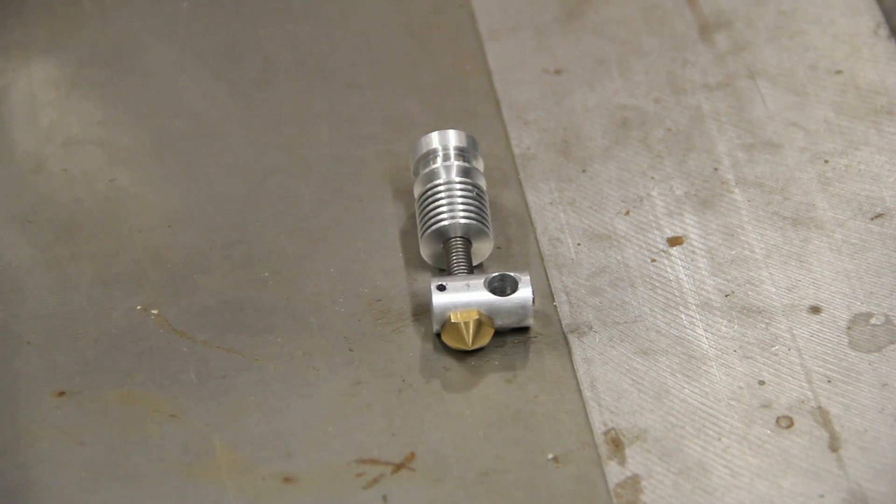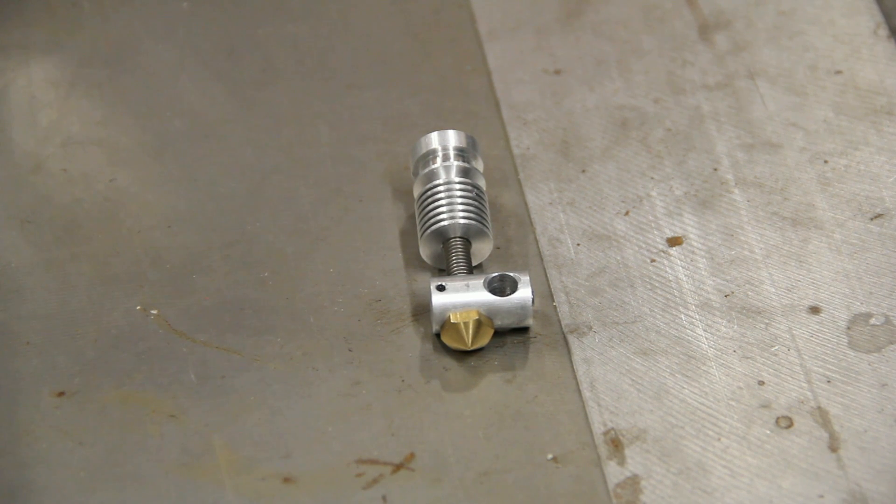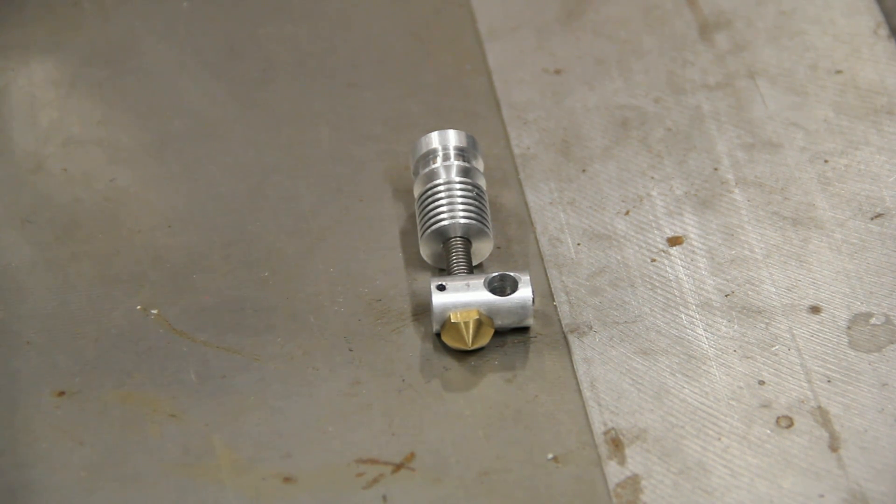So it does have an upper temperature limit which is still pretty generous. It's about 245 degrees centigrade which is enough certainly to extrude ABS and anything really except for polycarbonate. So this I think is a very capable hotend at a very nice price.